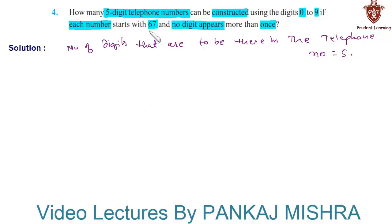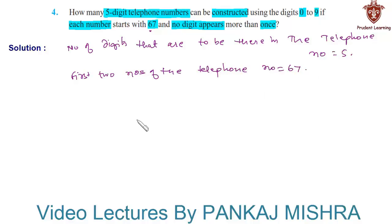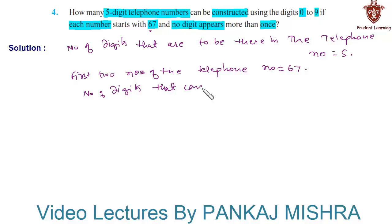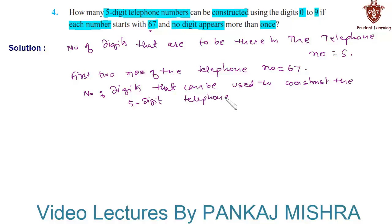Since the first two digits of the telephone number are 67, we need to construct the remaining digits. We are also given that the digits that can be used to construct the 5-digit telephone number are 0 to 9, that is 10 digits.